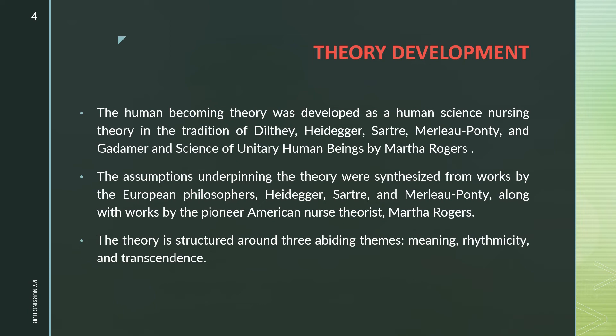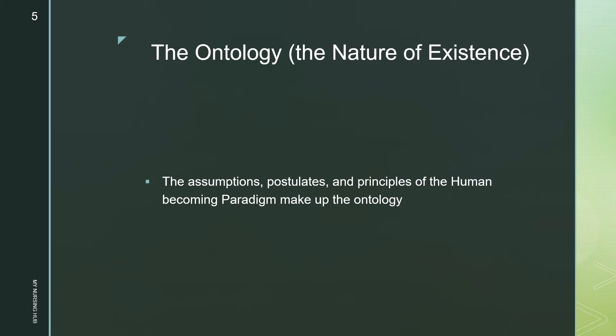Many theorists like Dilthey, Heidegger, Sartre, Merleau-Ponty, and Martha Rogers influenced the development of her theory. The assumptions underpinning the theory were synthesized from works by European philosophers. The theory is structured around three abiding themes: meaning, rhythmicity, and transcendence.